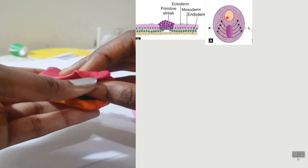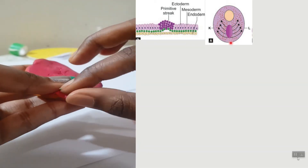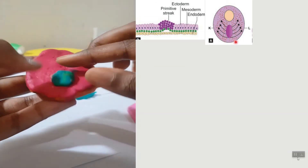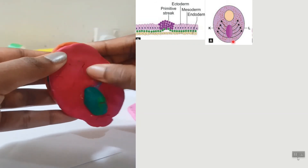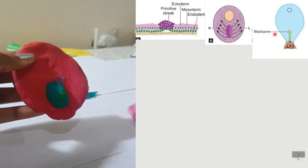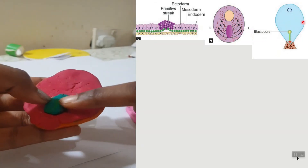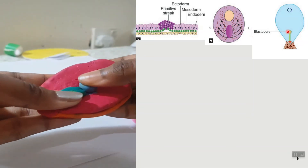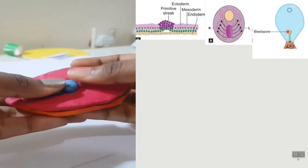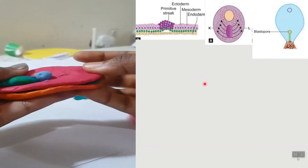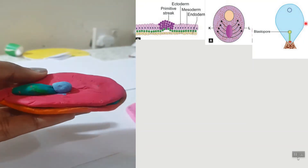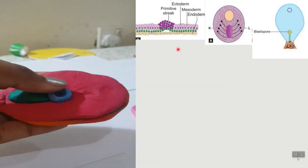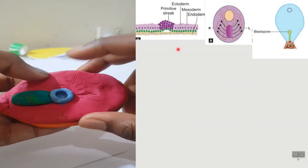Towards the caudal end of the primitive streak, there is also no mesoderm present — this forms the cloacal membrane. The embryonic disc, initially oval, now becomes more pear-shaped. From the cranial portion of the primitive streak, a node develops — that is Hensen's node, also called the primitive node. Within this node there is a depression called the blastopore.